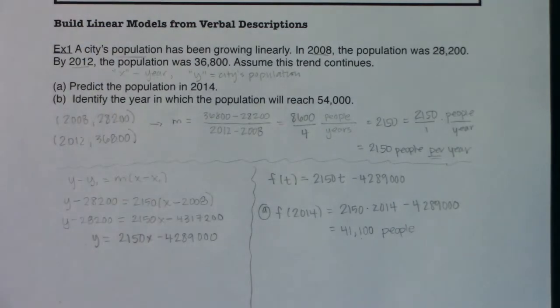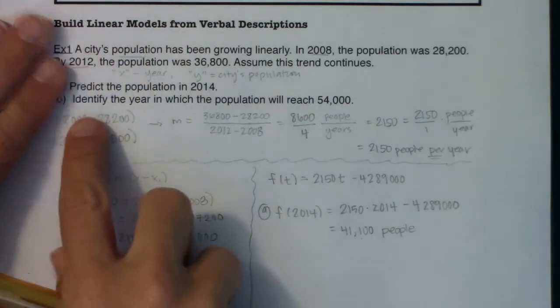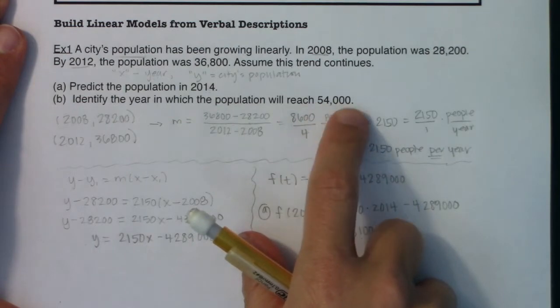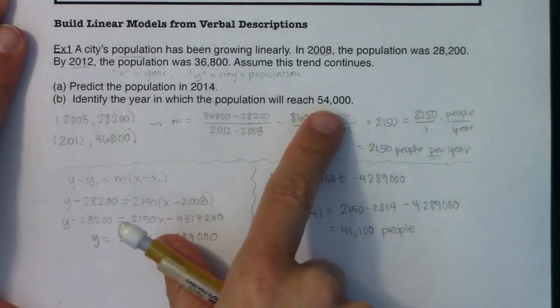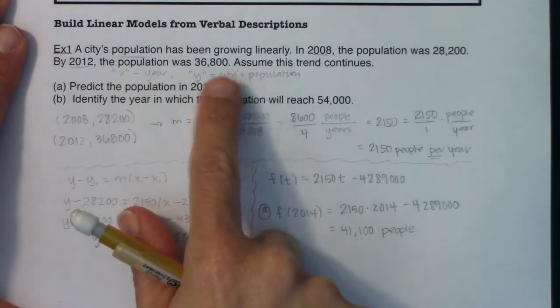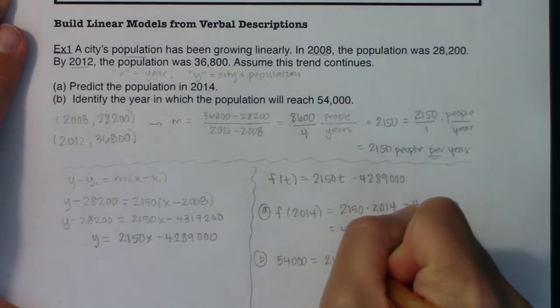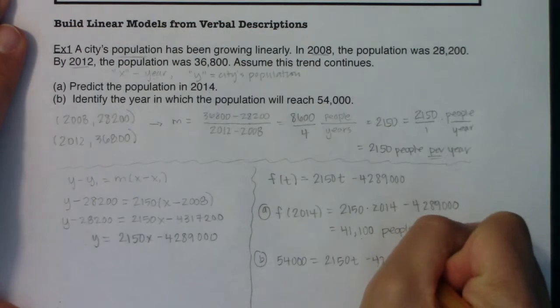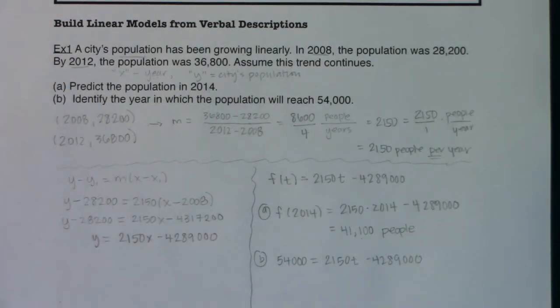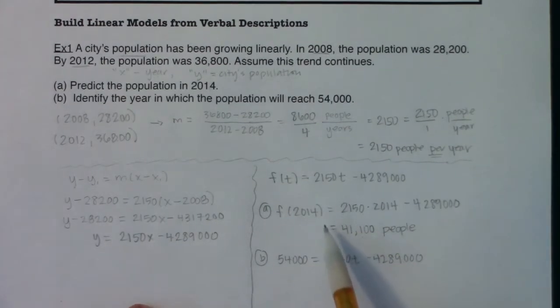So part B is asking us to go the other direction. It's asking us to do the step six of the how-to. This time they're saying, identify the year in which the population will reach 54,000. So I want to find the year when the population is 54,000. Well, is 54,000 an X value or a Y value? It's a Y value. So this time I'm going to set f(t) equal to 54,000 and see what year I get back out. Now, I don't have to, but I'm going to get some gut feelings. If in 2014 we were only at 41,000 people, I'm going to guess that it's going to take me a little bit longer to get all the way up to 54,000 people. I'm gaining about 2,100 a year. These are about 10,000, 13,000 apart. So I'm going to say this is going to take me like at least another five years. That would be my guess. So maybe 2019, 2020.